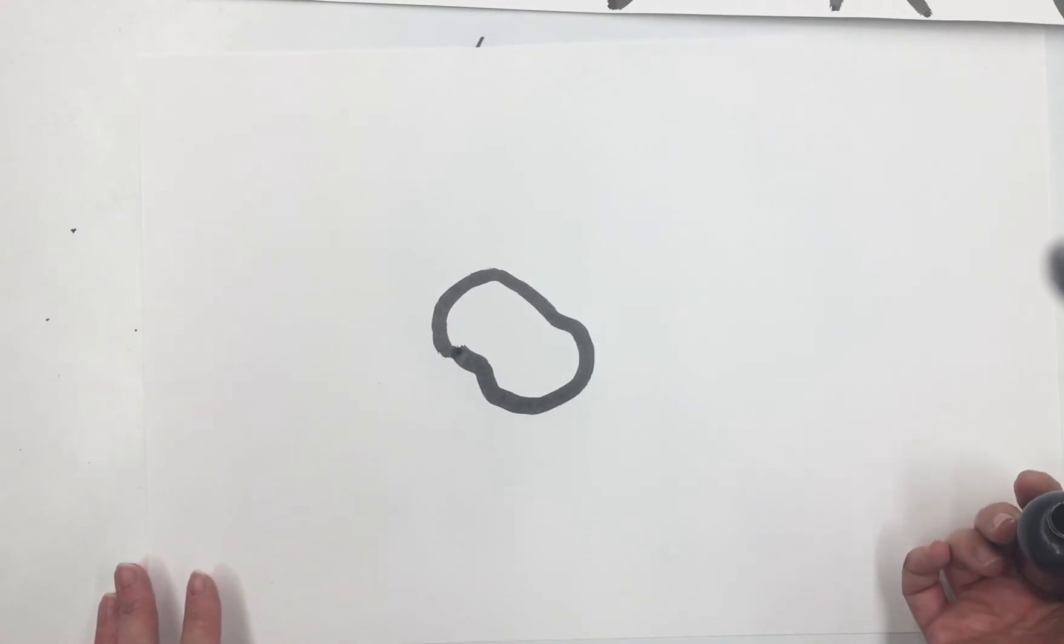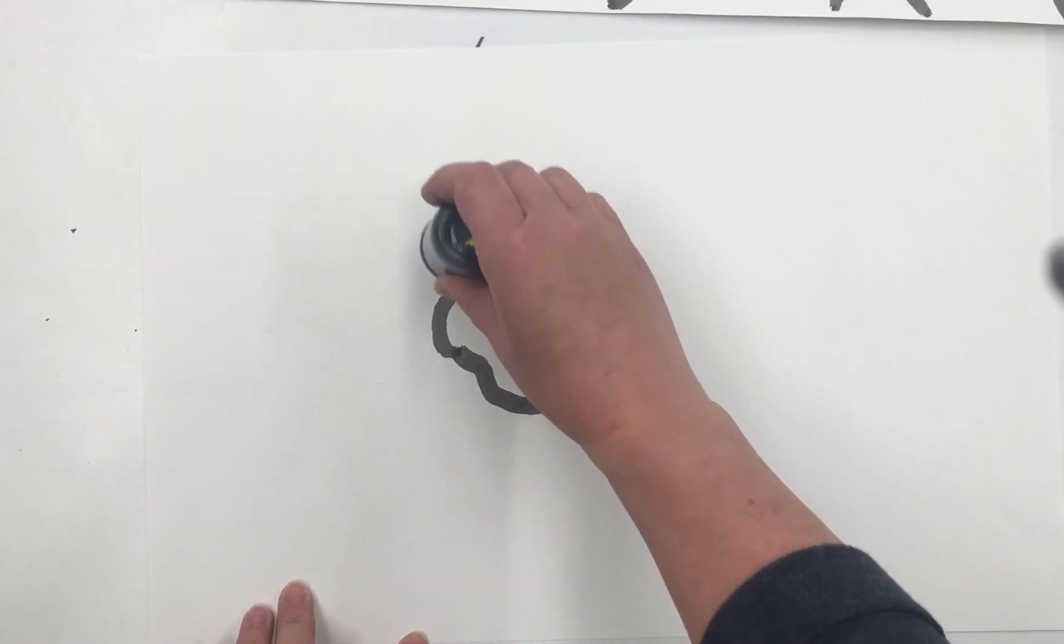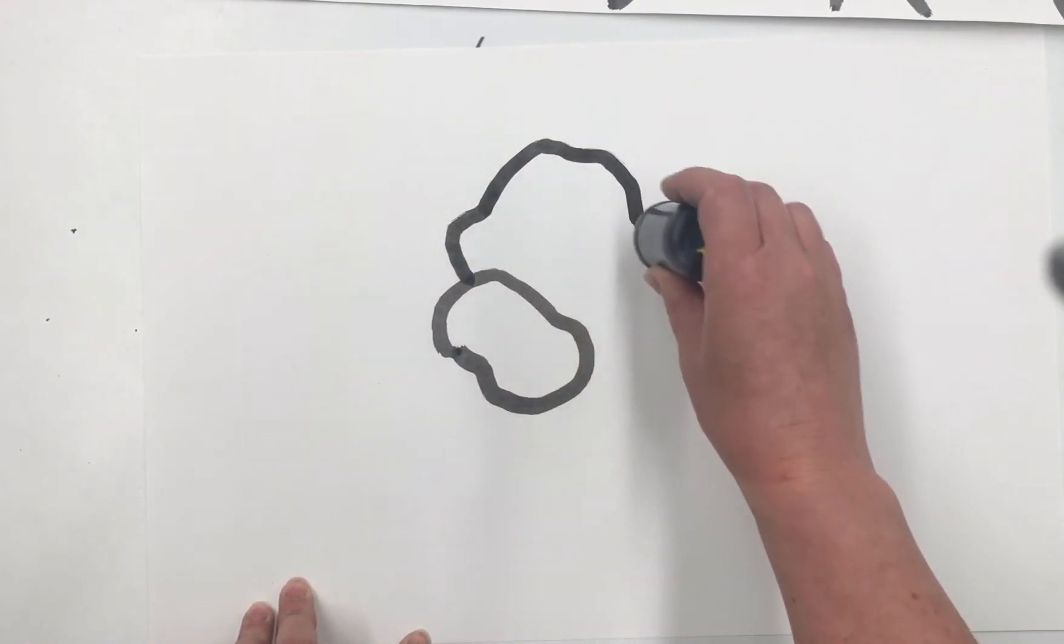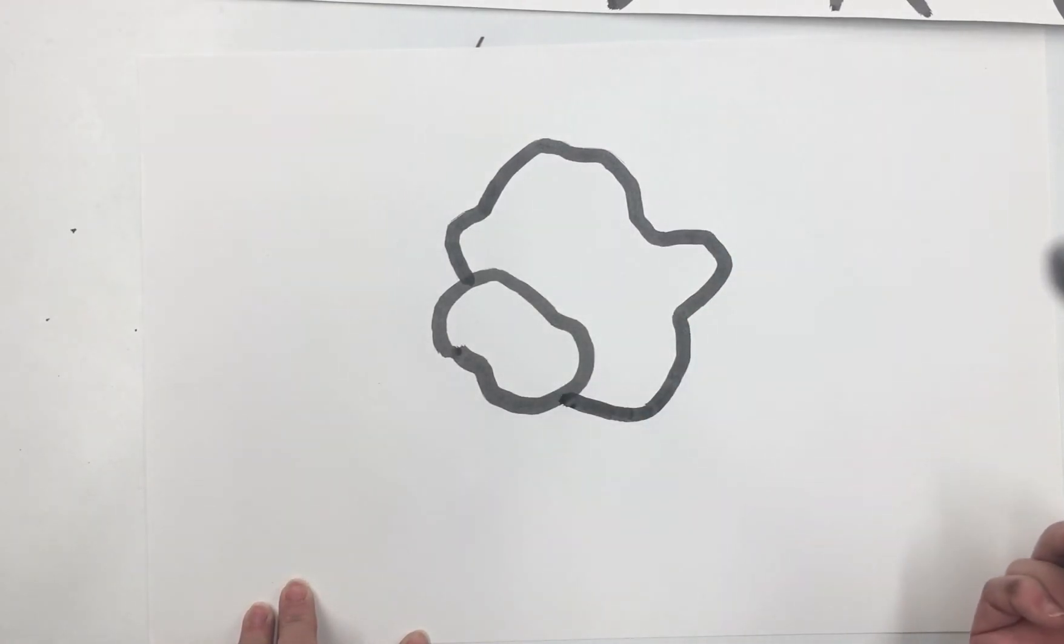Now I'm going to build out from that shape using irregular, uneven lines. They're kind of bumpy, but then they attach themselves back to that shape.